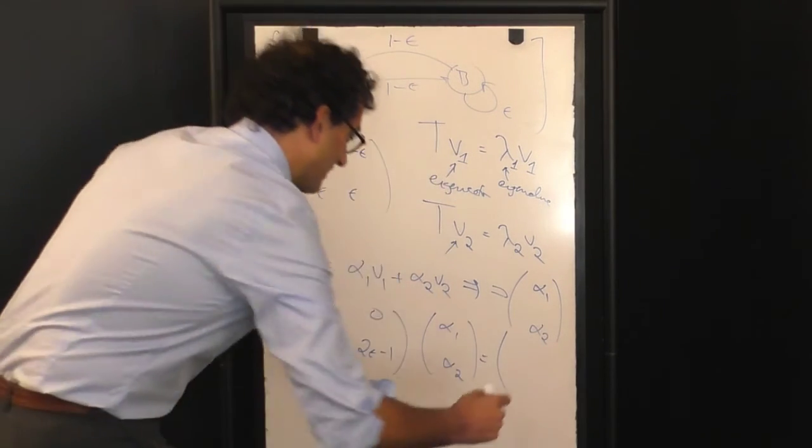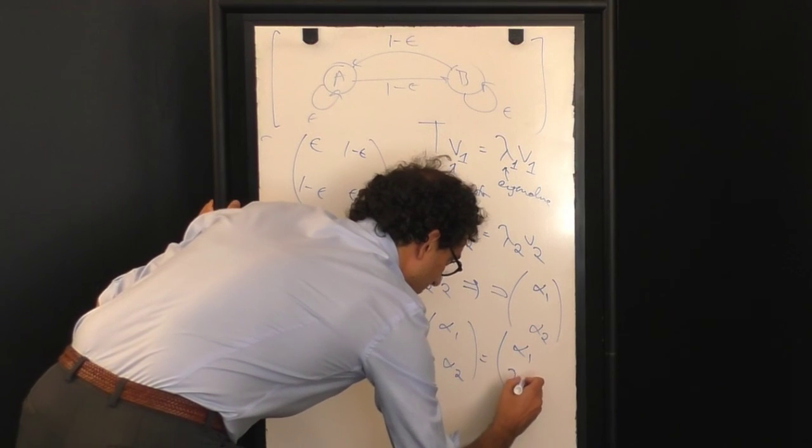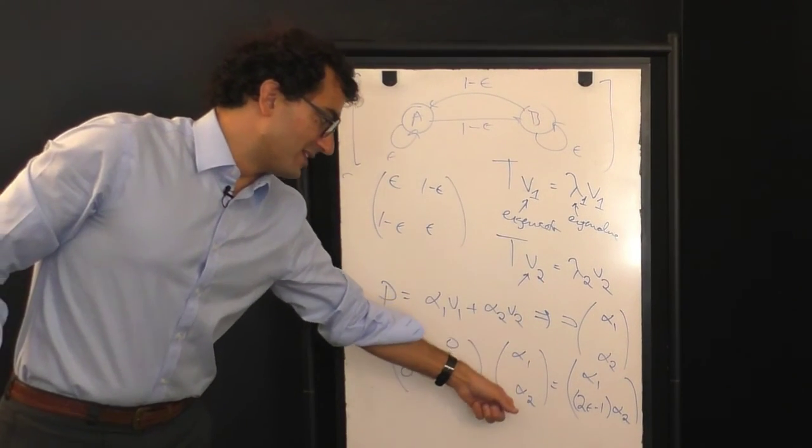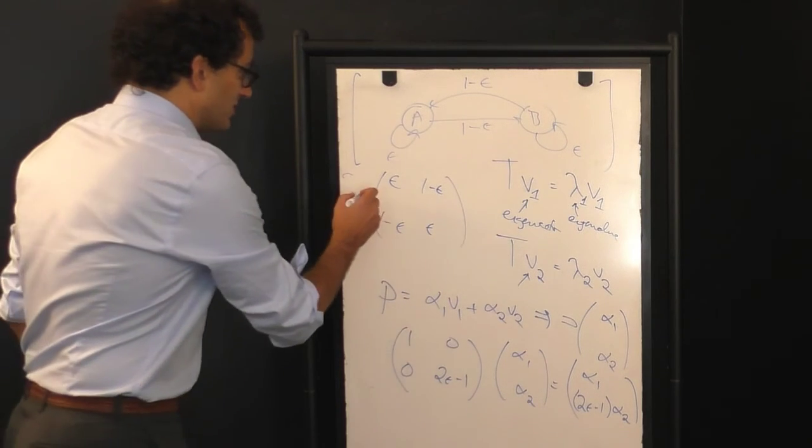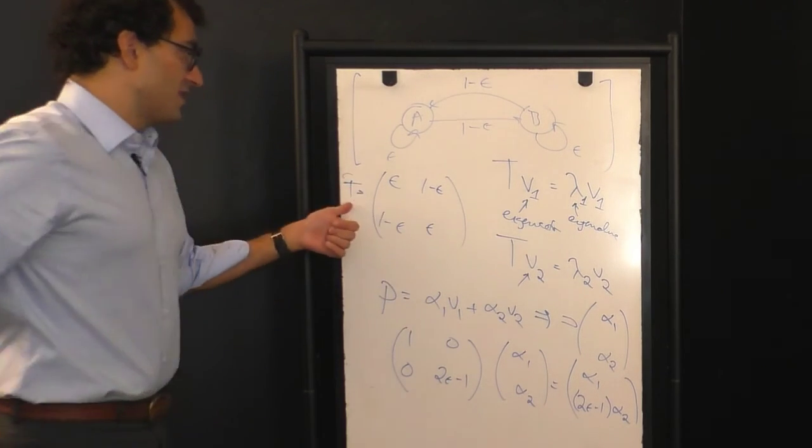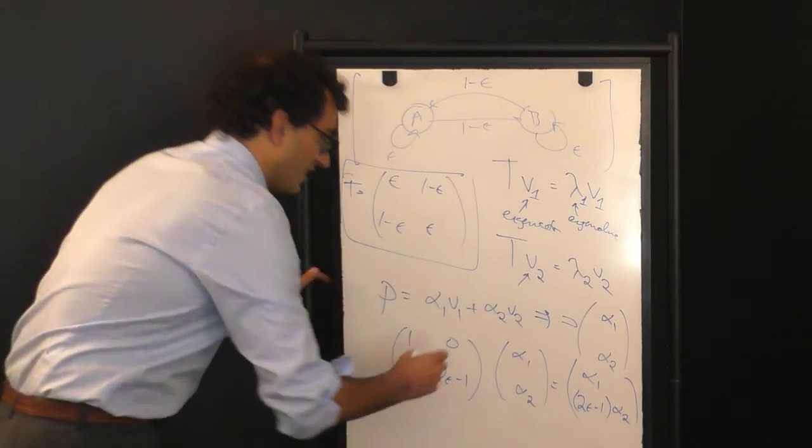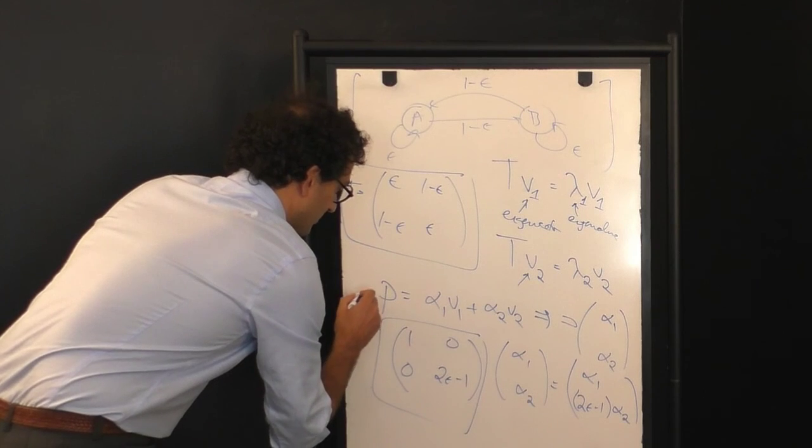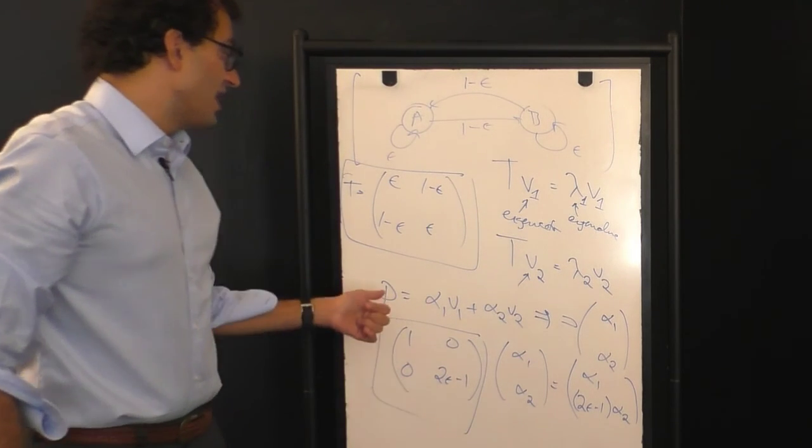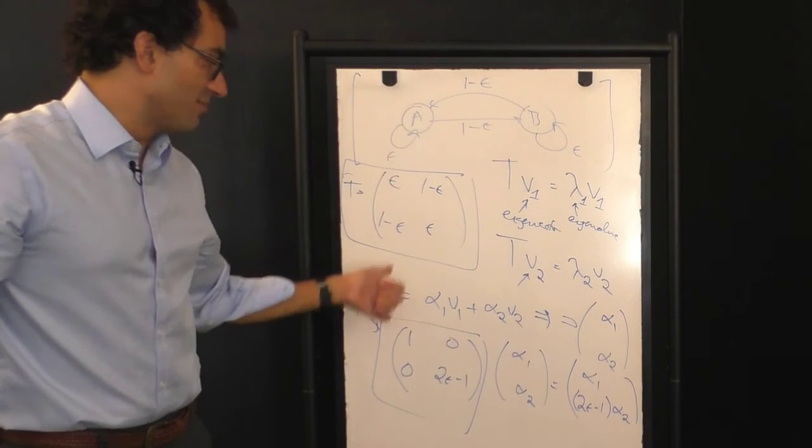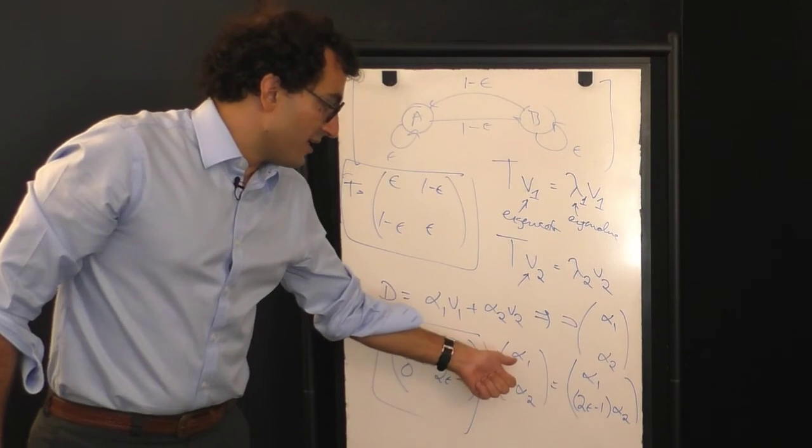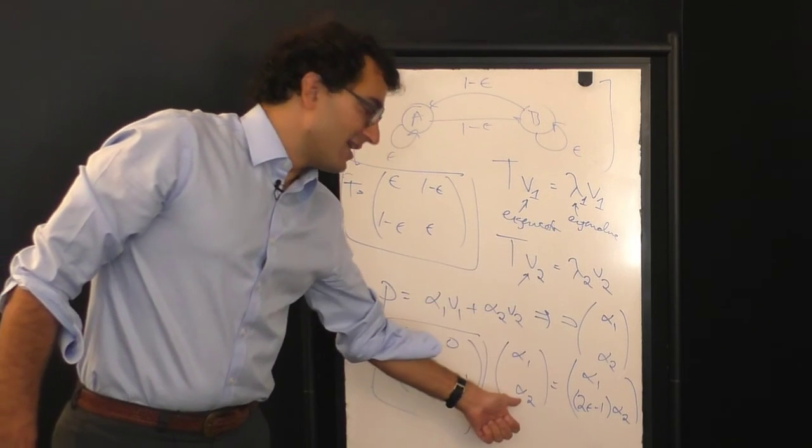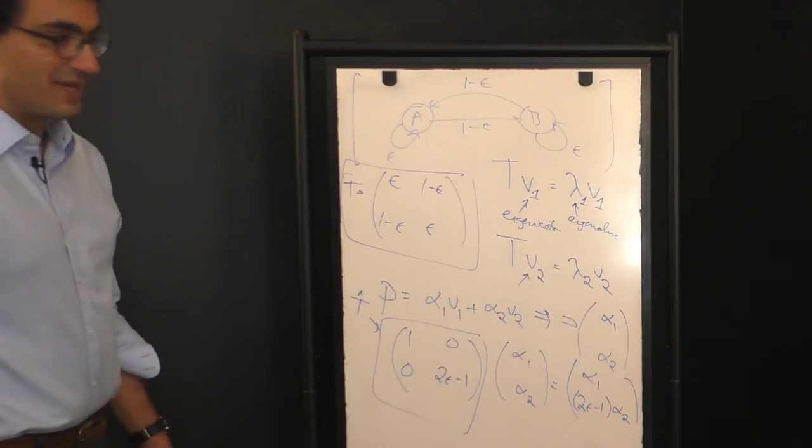it turns into a scaled version of each of these two entries. So what I've done here is go from this way of representing the Markov chain to this diagonalized representation here, which we can call T hat. And T hat now acts not on the probability of being in states A and B, but instead on the amount of probability that you have in the first eigenvector pattern and the amount of probability you have in the second eigenvector pattern.